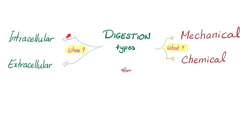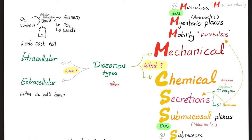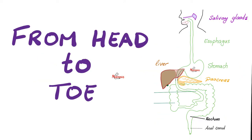Digestion has two types: intracellular and extracellular. Today we're concerned with extracellular digestion. Extracellular is to get the nutrients to the cell; intracellular is what happens in the cell. You can classify it another way: mechanical for motility and chemical for secretions. Mechanical motility — myenteric plexus in the musculosa. Chemical means secretion by the submucosal plexus, which is in the submucosa, from head to toe.